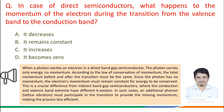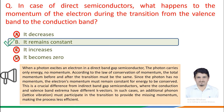Since the photon has no momentum, the electron's momentum must remain constant. This is a crucial difference from indirect band gap semiconductors, where the conduction and valence band extrema have different K vectors. In such cases, an additional phonon — a lattice vibration — must participate to provide the missing momentum, making the process less efficient. The correct answer is: it remains constant.